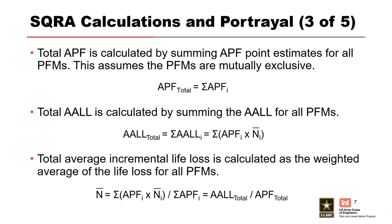Once we have the geometric means, we can calculate the total annual probability of failure (APF), average annual life loss (AALL), and average incremental life loss. The total APF is calculated by summing APF point estimates for all PFMs, assuming they are mutually exclusive. The AALL is calculated by summing the average annual life loss values for all PFMs. The total average incremental life loss is the weighted average, calculated by dividing the total AALL by the total APF.